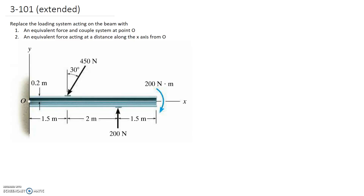For this question we're asked to replace the loading system acting on the beam with firstly an equivalent force and couple system at point O, and secondly an equivalent force acting at a distance along the x-axis from O. We're going to look at the two different types of equivalent systems. The equations we need are the sum of moments about point O equal to the resultant about O, plus the resultant force equations giving us the resultant in the x and y directions.